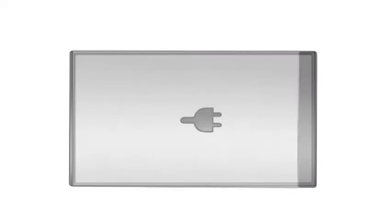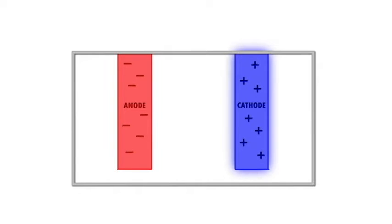A lithium-ion battery has three main parts: a negatively charged electrode called the anode, a positively charged electrode called the cathode, and a conductive fluid that fills the rest of the battery, called the electrolyte.